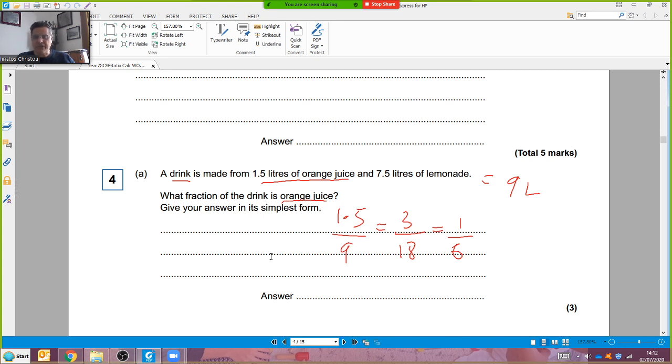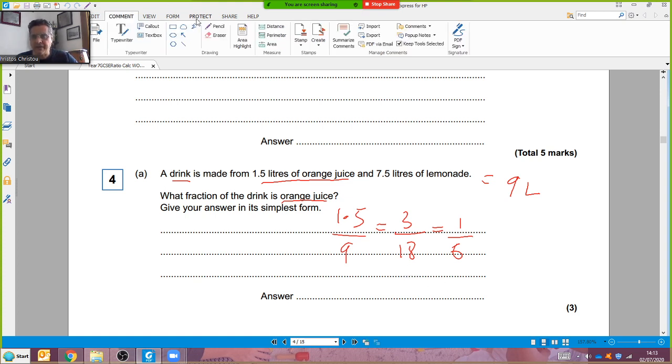What fraction of the drink is orange juice? Well, it's 1.5 litres divided by 9. And Hudson, you don't divide by 3 and get 0.5 over 3, that's not simplified. If you multiply by 2, you end up with 3 over 18. Now that can be simplified to these lovely whole numbers.